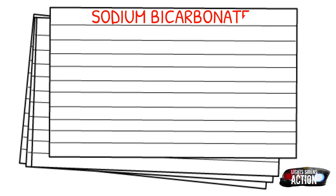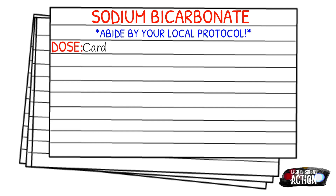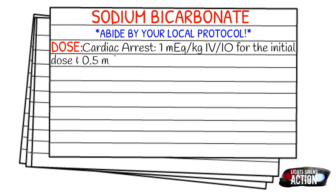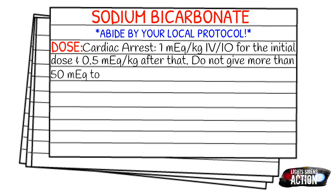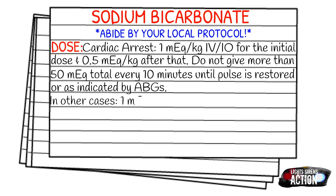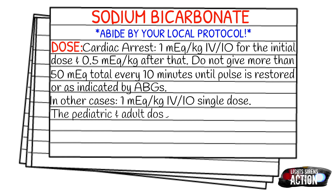Please abide by your local protocol and scope of practice. The dose for cardiac arrest is 1 mEq/kg IV or IO — this is your initial dose. After that, it's 0.5 mEq/kg. Don't give more than 50 mEq total every 10 minutes until the pulse is restored or as indicated by ABGs. Out in the field, we can't take arterial blood gas, so just go off what you know. In other cases like crush syndrome or the other indications listed, it is 1 mEq/kg IV or IO as a single dose.